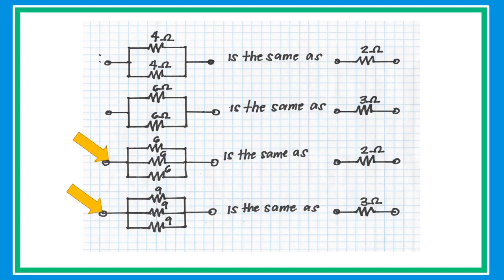If three resistors of the same value are connected in parallel, just divide the value of the resistor by the total number of resistors. For example, a 6-ohm resistor divided by 3 equals 2 ohms. This applies the same way if you have 4, 5, or 10 identical resistors in parallel — just divide the resistor value by the number of resistors.